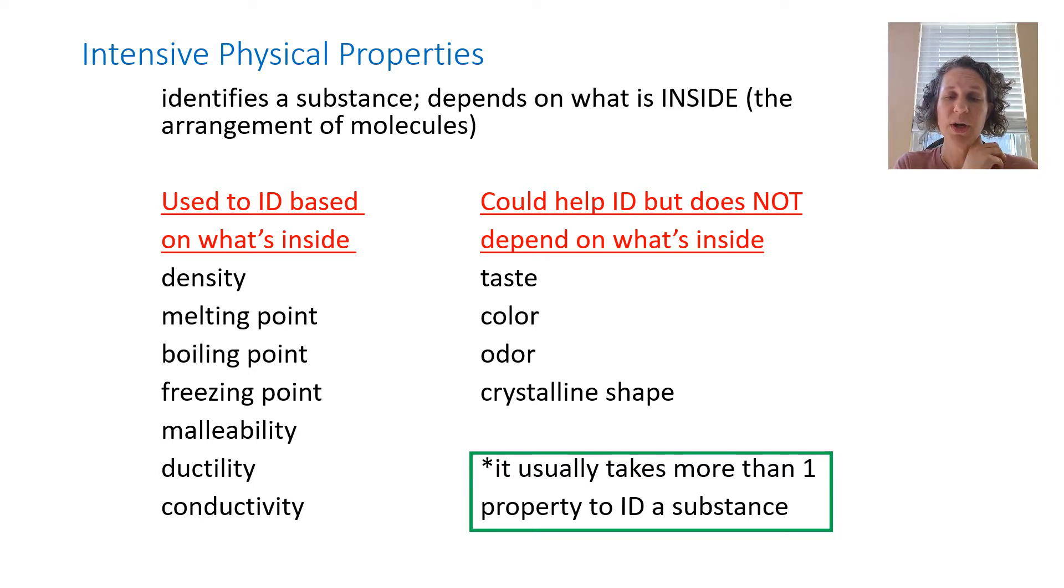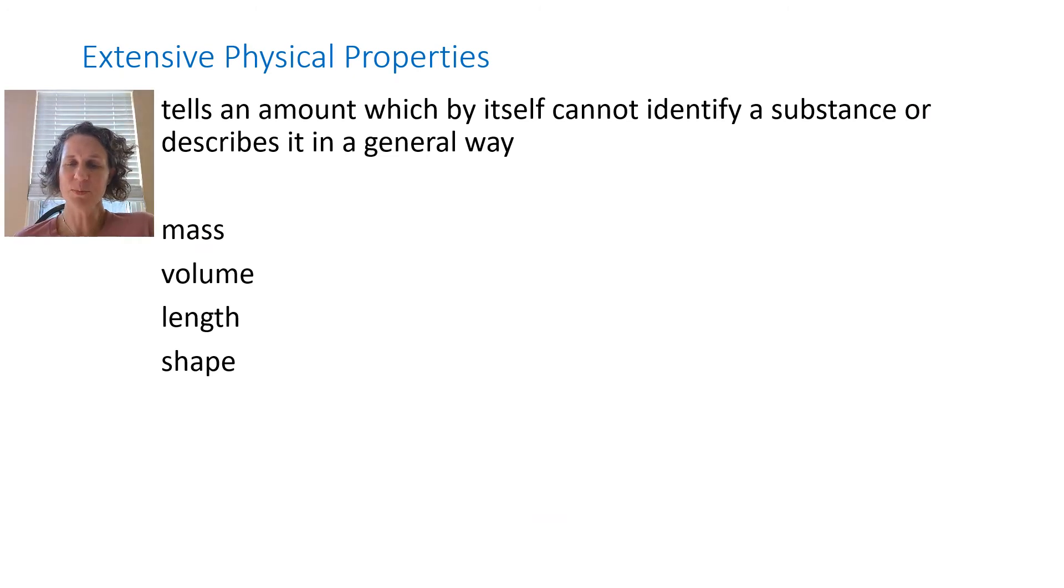Extensive physical properties are just way too general. They can tell you an amount, but by themselves they can't identify a substance or describe it in any other way than just a general description. It's like me saying, okay go into the science room and bring me the thing that is a square. There are multiple things in there. Or if I say okay go into the science room and bring me the three pound object, that's not enough. But if I was more specific and you have the equipment, then I could say okay find me the thing that has this density or that is malleable. Extensive is a description but it is not an identifying description.